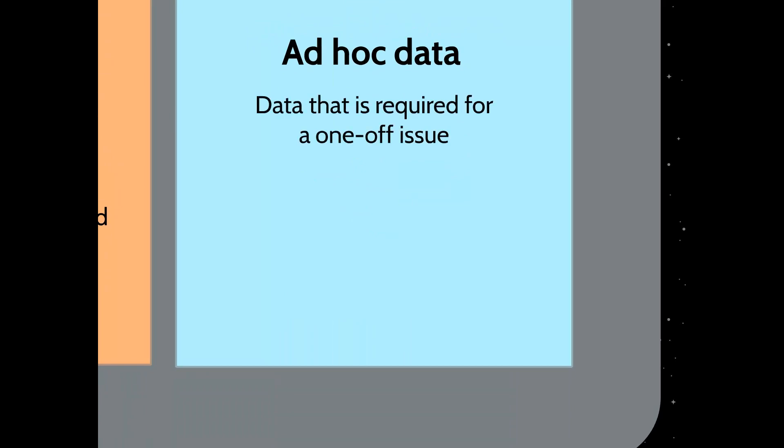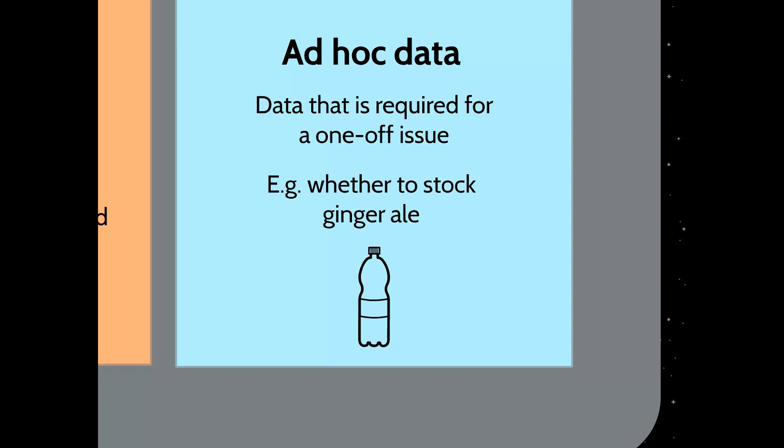Ad hoc data, on the other hand, is something required for a one-off issue — you don't need to review it every week or month. An example would be whether the pie shop should stock ginger ale. You'd do a bit of research, perhaps asking customers: have you ever drunk ginger ale? Would you be interested in purchasing it? If you get a lot of negative feedback and most people say they don't want ginger ale, you've got your answer. You won't continuously ask that question every week, hoping for a different answer or continually checking whether people still don't want the shop to stock ginger ale.